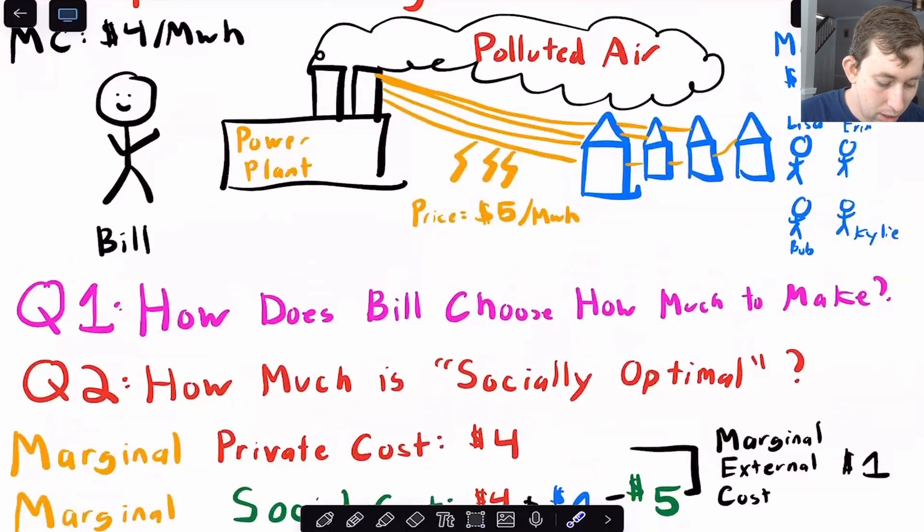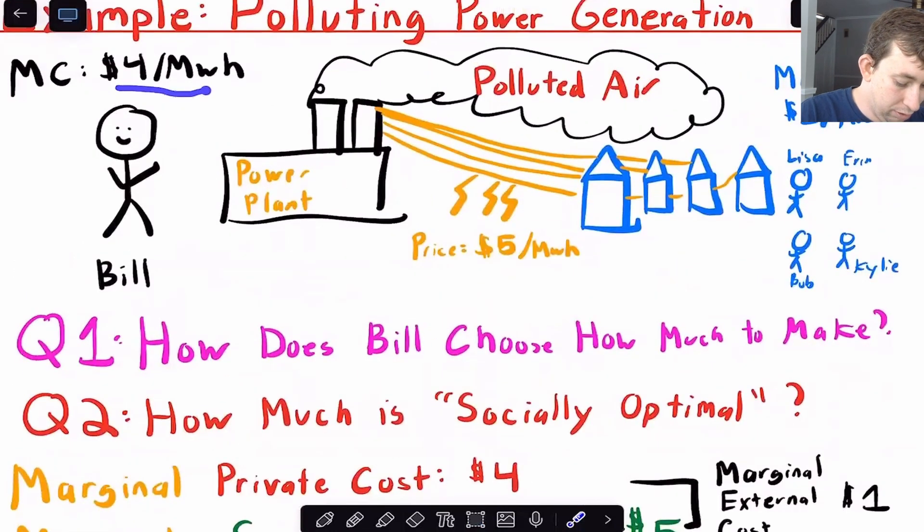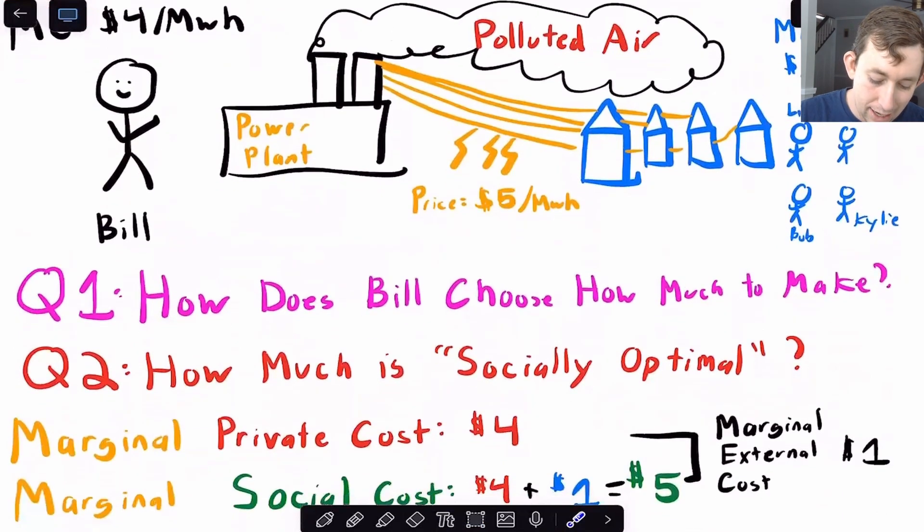So what I'm going to argue is that Bill is just going to set the marginal cost equal to the marginal revenue. So notice that his marginal cost is $4 per megawatt hour. The price is $5. He's pumping out as much electricity as he can. He's burning as much coal as his generators can handle.